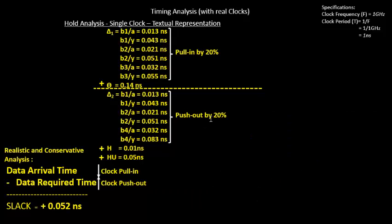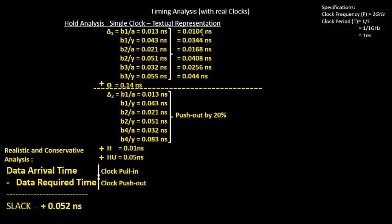We'll take off the graph and put the 20% derated values over here. So 10 picoseconds is 20% less than 13 picoseconds. 34 picoseconds is 20% less than 43 picoseconds. Similarly, 25.6 picoseconds is 20% less than 32 picoseconds. So we have done a clock pull-in over here, and the concept of clock pull-in was fairly clear in the previous videos.